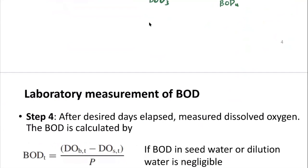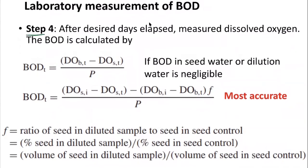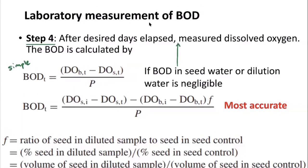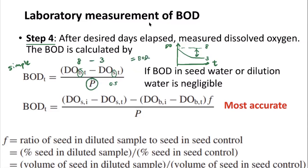The final step is the calculation. There are two ways to do it. The simple method is when you don't have a control group — you just refer to the change of dissolved oxygen in the sample bottle: DO_initial minus DO_final. So if DO goes from 8 to 3, and the dilution factor P is 0.5, the BOD is calculated as (8 minus 3) divided by P, giving a result of 10 milligrams per liter.